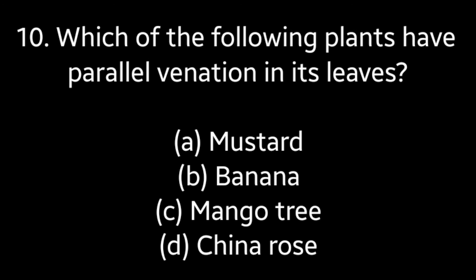Question number 10: Which of the following plants have parallel venation in its leaves? Mustard, Banana, Mango tree, China rose. Answer is option B, Banana.